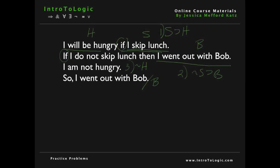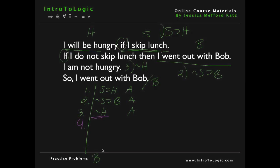To prove this argument, we draw a scope line and write our assumptions: first, 'if s, then h'; second, 'if not s, then b'; third, 'not h'. Then we write our conclusion at the bottom, which is b. Now we ask ourselves what we can do with these three assumptions. We can do something with the single sentence letter 'not h'. Using line 1, we can derive 'not s' with lines 1, 3, and modus tollens, because modus tollens says that if we have a conditional and the negation of the consequent, we can derive the negation of the antecedent — which in this case is 'not s'.